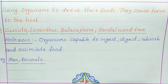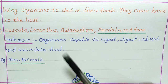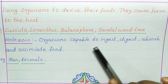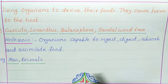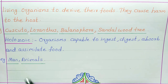Next is holozoic. Holozoic refers to organisms capable of ingesting, digesting, absorbing, and assimilating food. Examples are man and animals, which are examples of holozoic organisms.